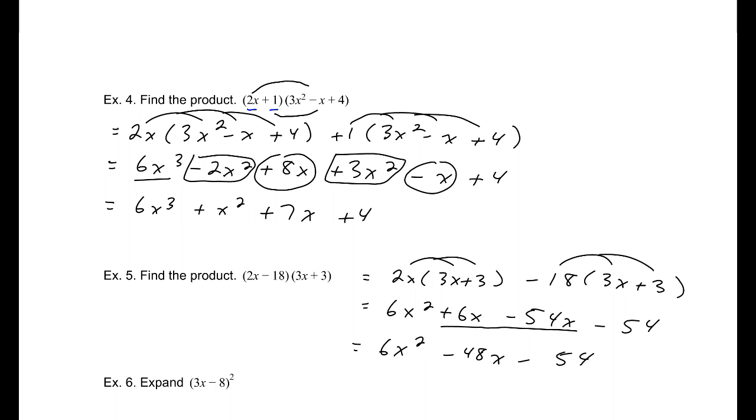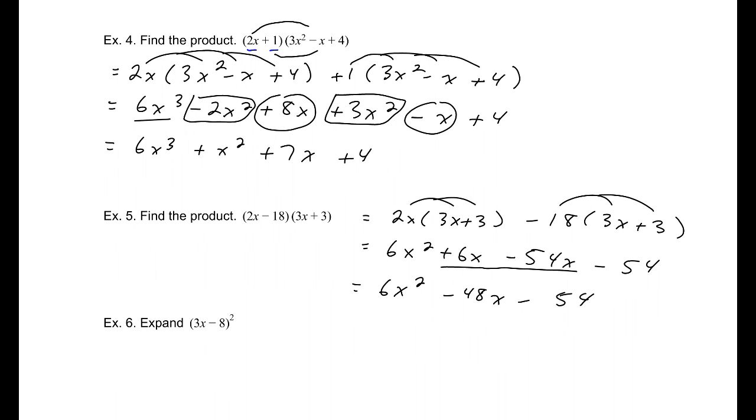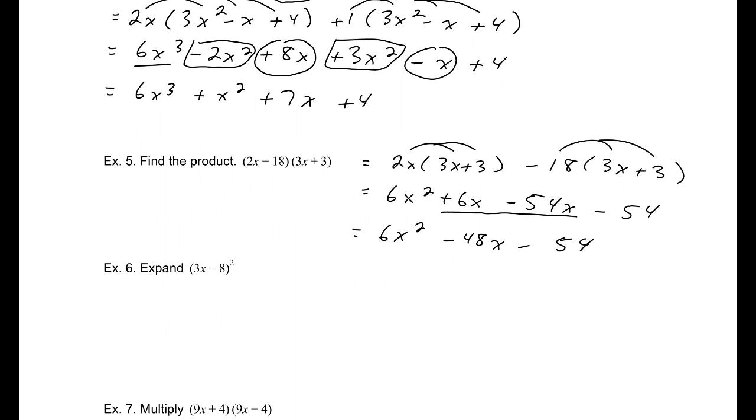Now, a common technique here is to double distribute, which is, in a sense, what we're doing. What I often do, is 2x times 3x, which gives the 6x squared. 2x times 3, which gives us the 6x we have here. Negative 18 times 3x, which gives you the negative 54x. Negative 18 times 3, which is the negative 54, and then combine. It's the same process. It's a different way to organize it. So you've probably seen these written a little differently.